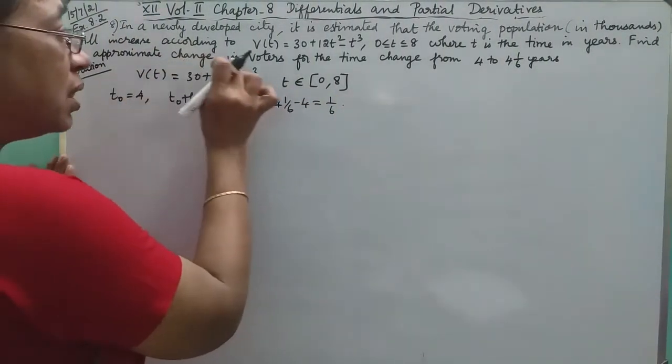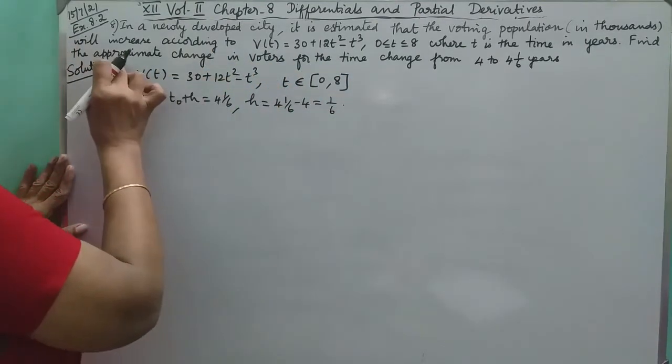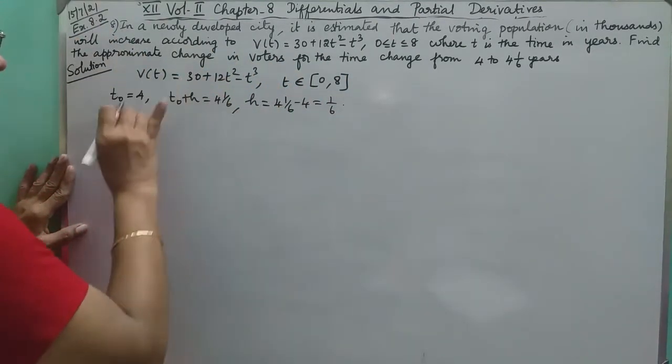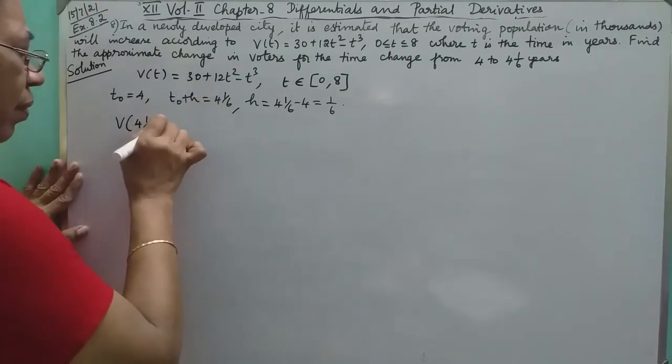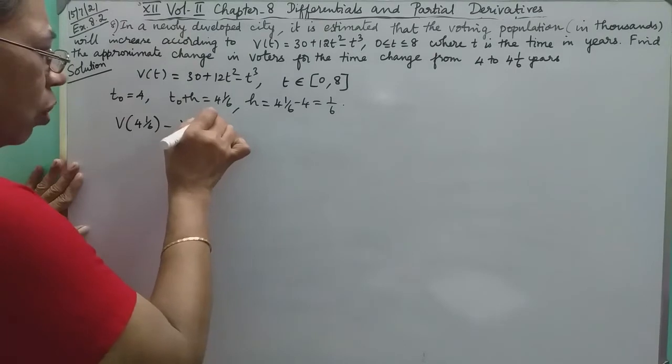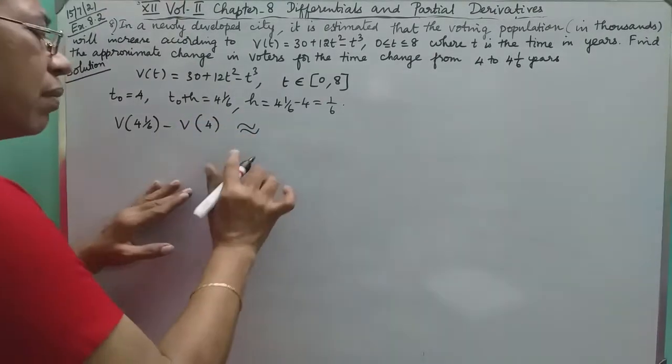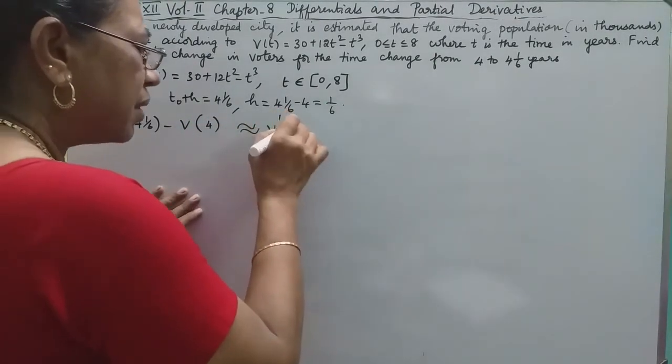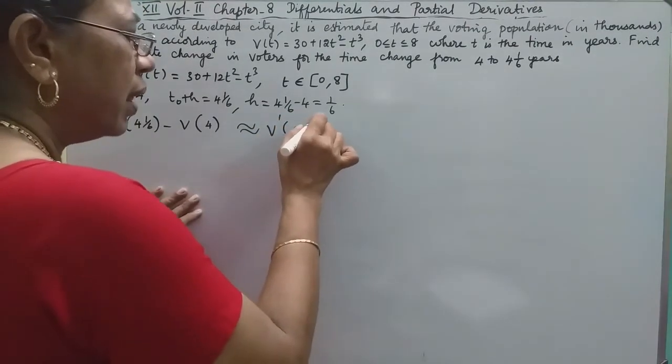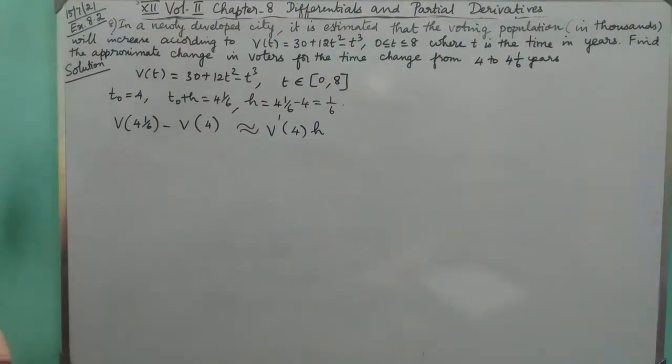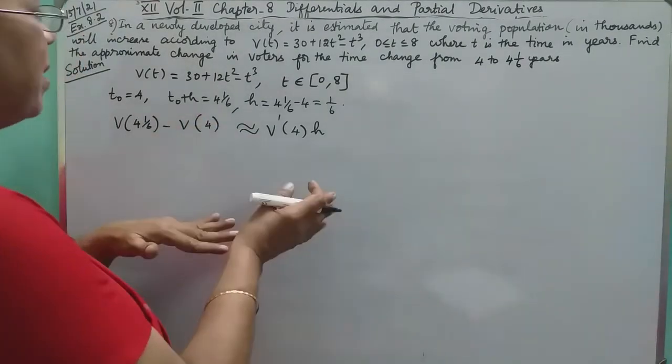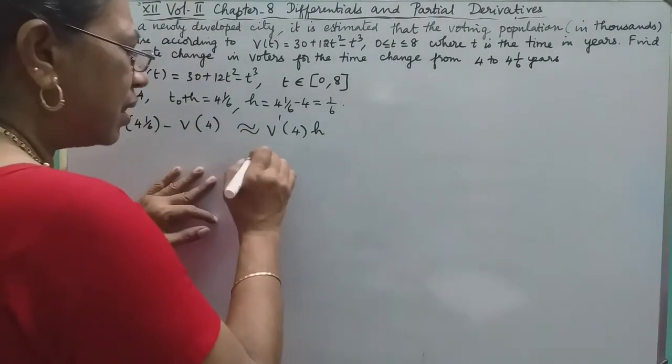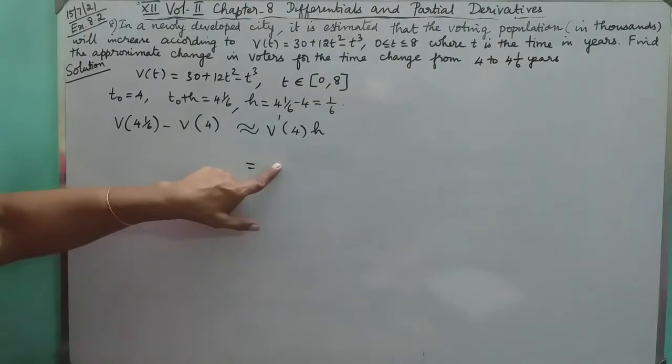To find the approximate change in voters, that is V(new) minus V(old), we know approximately that is equal to V'(old) × h. If we use V instead of f, it's the same formula. So for approximation, we need to find the derivative when t equals 4.